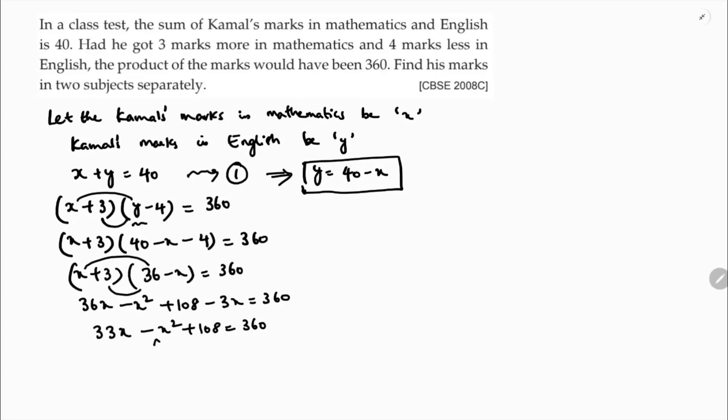Here x squared is negative, so transpose all the values towards right side. We get x squared minus 33x plus 360 minus 108 equals 0. So x squared minus 33x plus 252 equals 0.